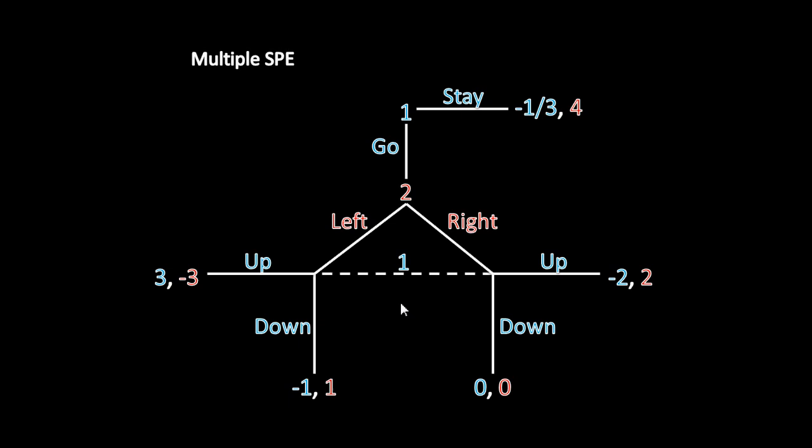Moreover, this is troublesome because if Player 2 goes left, then Player 1 would rather go up, because 3 is greater than negative 1. But if Player 2 went right, then he'd rather go down, because 0 is greater than negative 2. So we can't just chop off this subgame right here and try to solve it, or cut it off right here and try to solve that, because Player 1 doesn't actually have that sort of information. We can't pretend like he does as we're trying to solve this game.